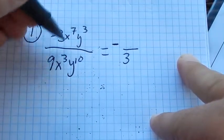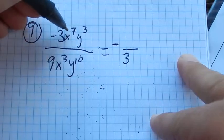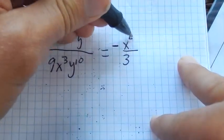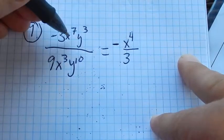x to the 7th divided by x cubed - three of these x's cancel out three of those. So that leaves me four x's in the numerator, all multiplied together.